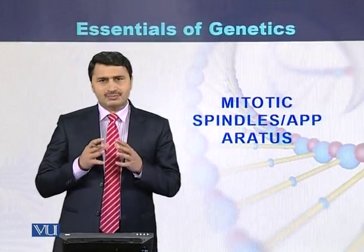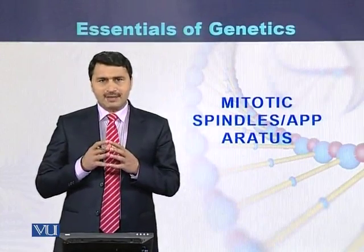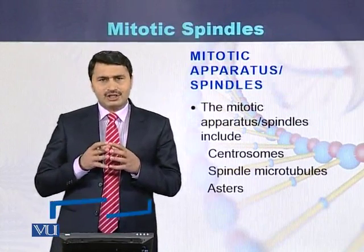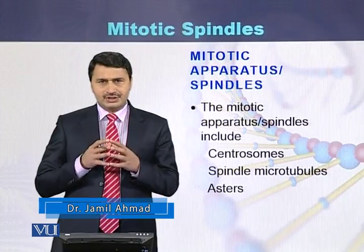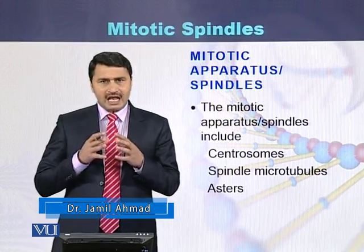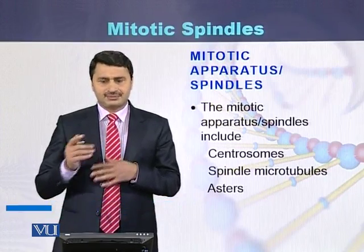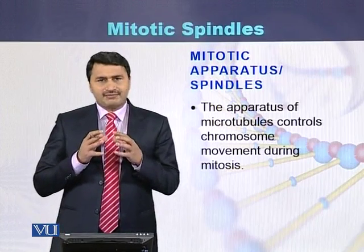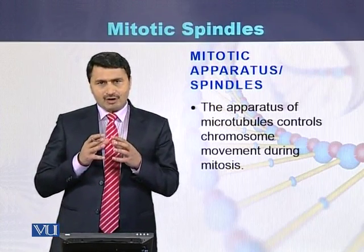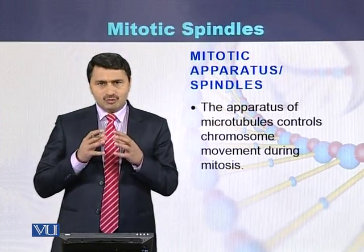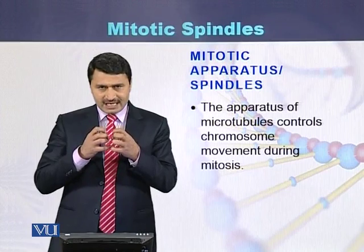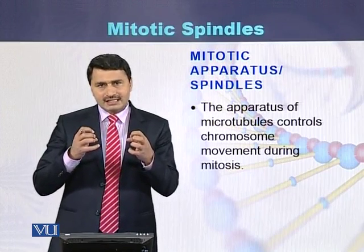Mitotic spindles, or mitotic apparatus, consist of three things: centrosomes, asters, and spindle fibers. The function of the mitotic spindle apparatus is to move the chromosomes from the metaphase plate towards the poles of the cell.